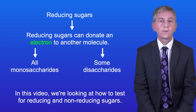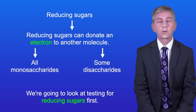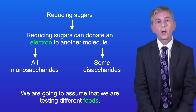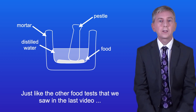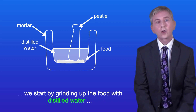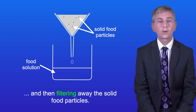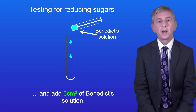In this video we're looking at how to test for reducing and non-reducing sugars, starting with reducing sugars. Remember that safety goggles should be worn throughout this experiment. We start by grinding up the food with distilled water and then filtering away the solid food particles. We then place three centimeters cubed of our food solution into a boiling tube and add three centimeters cubed of Benedict's solution.